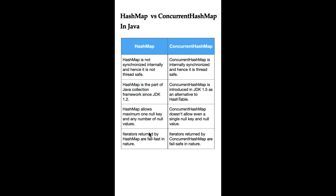The iterators in HashMap are fail-fast, which means if we try to change the HashMap while iterating, it will throw a ConcurrentModificationException. Whereas the iterators in ConcurrentHashMap are fail-safe — if we try to change the ConcurrentHashMap while iterating, it does not throw a ConcurrentModificationException.